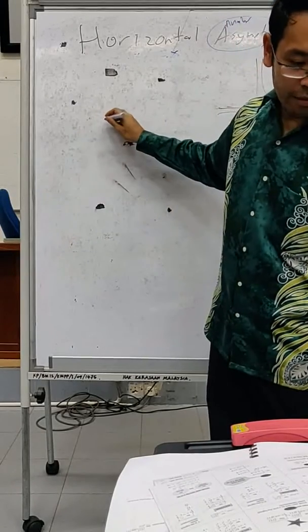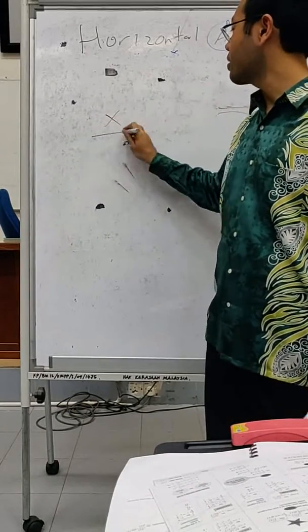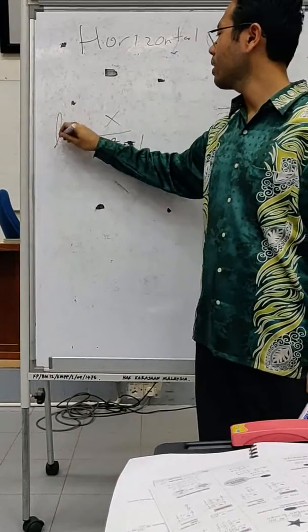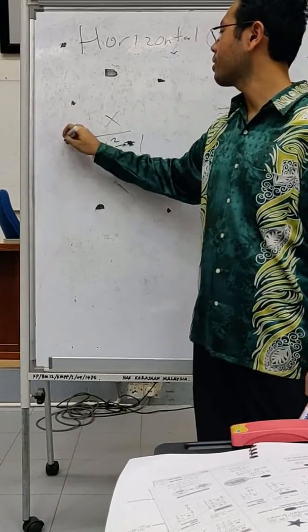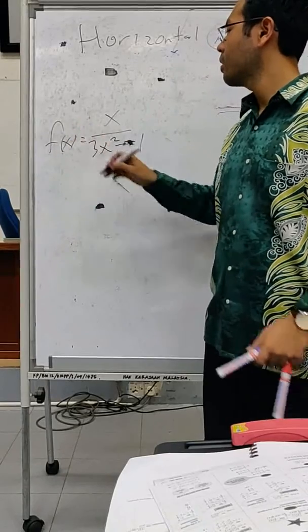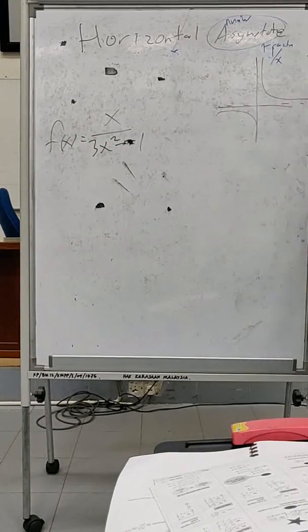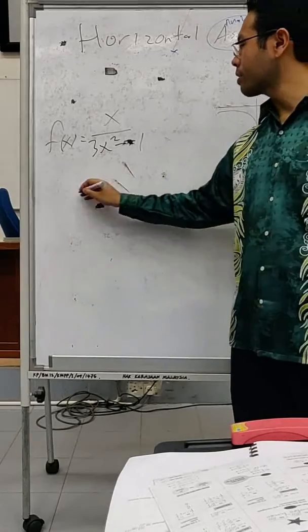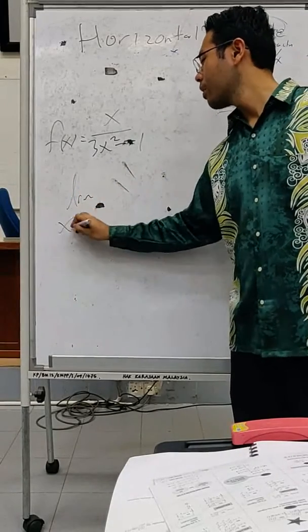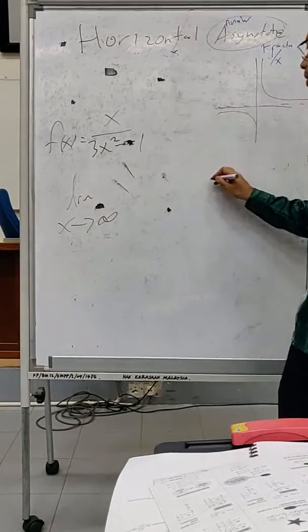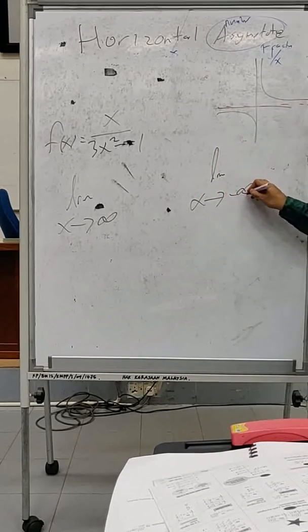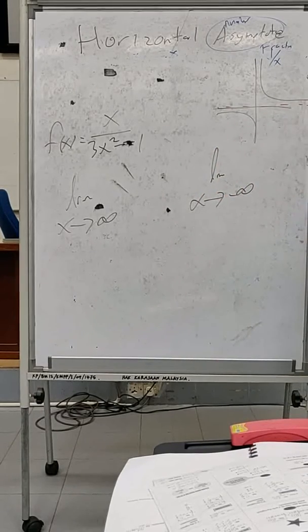For fractions, this is what our normal function looks like. For example: x over (3x² minus 1). We want to check the horizontal asymptote. As I mentioned, for horizontal asymptote you check x approaching infinity and x approaching negative infinity. For this particular case I think we get the same answers for both.